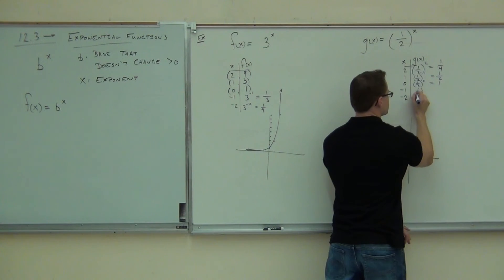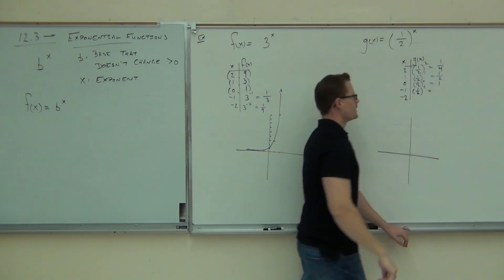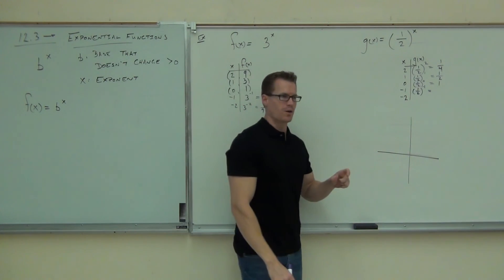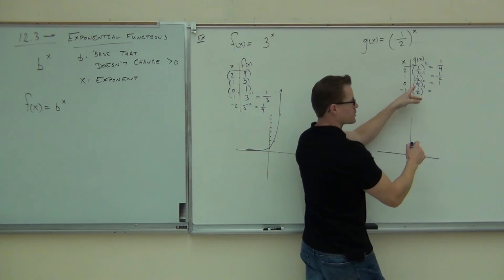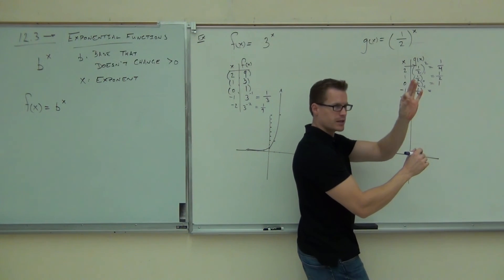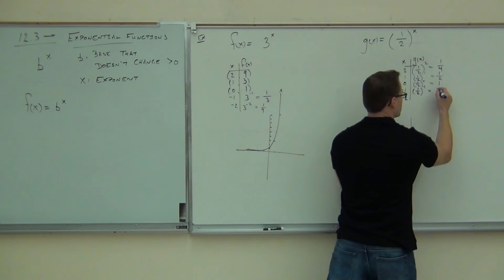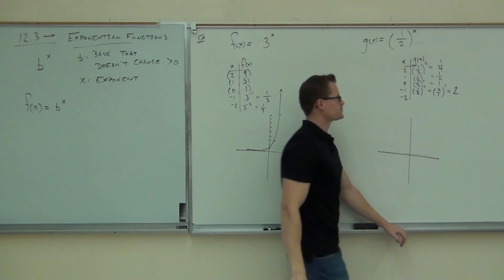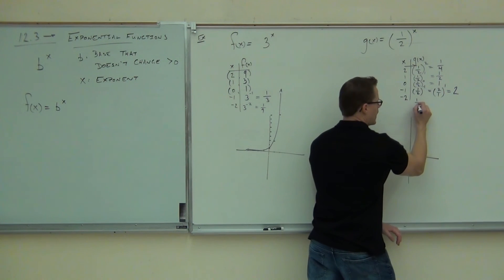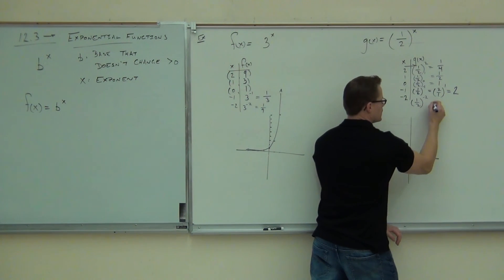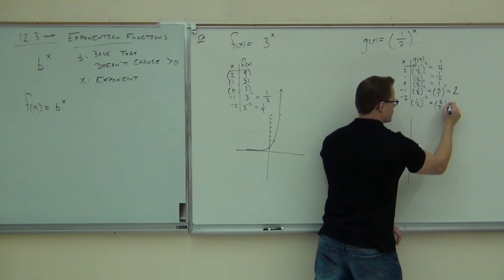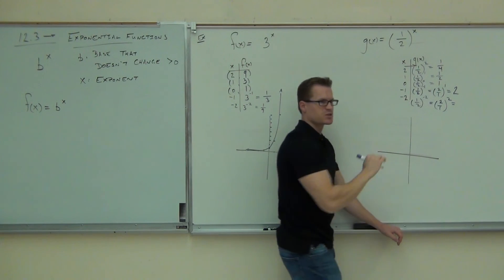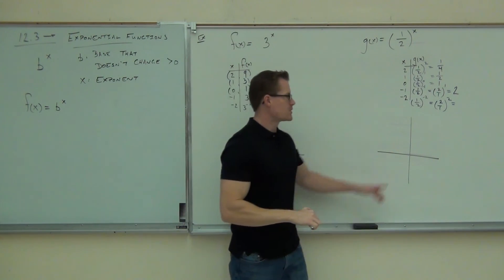Negative one: that's one-half to the negative one power. If you have a fraction to a negative power, you flip the fraction — reciprocate it — and it changes the sign of the power. So you'd have two over one to the first, which is just two. And one-half to the negative two: you flip your fraction, it changes the sign of the exponent, giving you two squared, which is four.